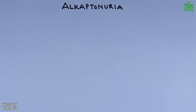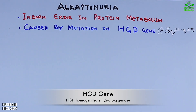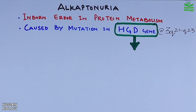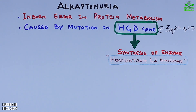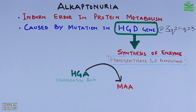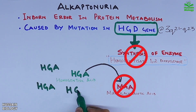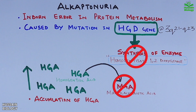Now moving to alkaptonuria, which is also an inborn error in protein metabolism caused by mutation in the HGD gene located at 3q21-23. This HGD gene drives synthesis of the enzyme homogentisate 1,2-dioxygenase, which is crucial for protein metabolism. This enzyme acts on homogentisic acid (HGA) and converts it into maleylacetoacetic acid. When the HGD gene is mutated, the enzyme is absent and HGA is not converted, leading to accumulation of HGA within the body.